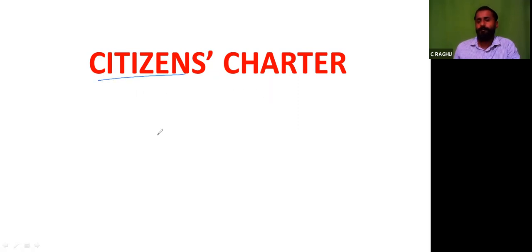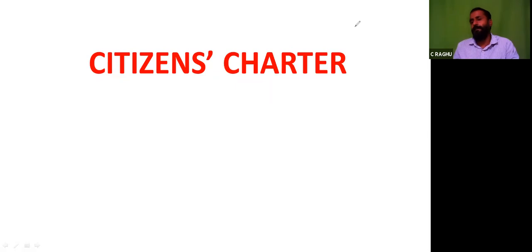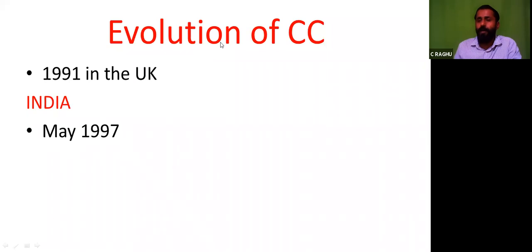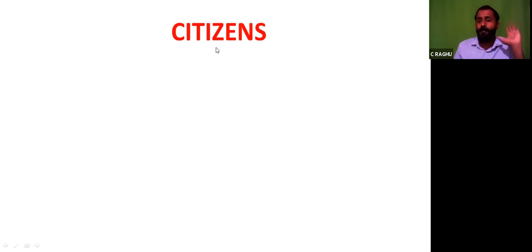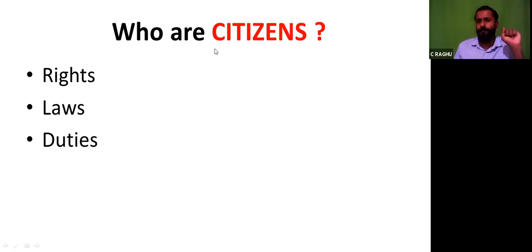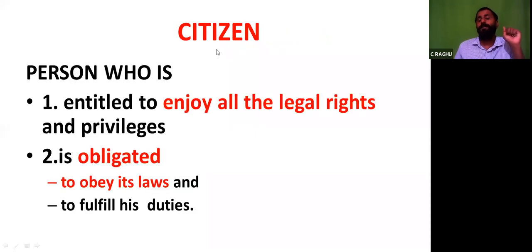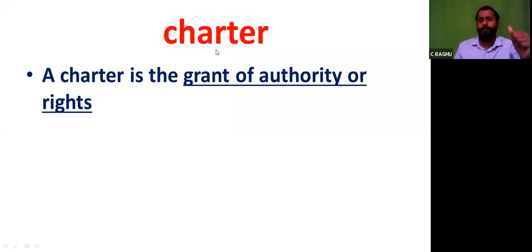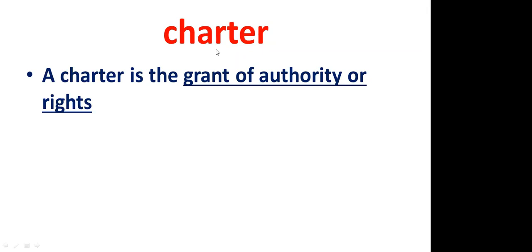Who is a citizen? What do you understand by charter? This is a very important concept — please concentrate and internalize these things. Citizens Charter evolved and came into existence in its present form in 1991 in the UK, and in India it was introduced in 1997. Citizens are those who have rights and also the obligation of obeying the law and carrying out their duties.